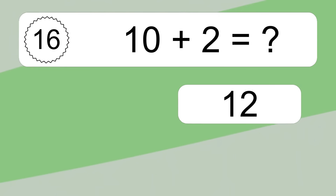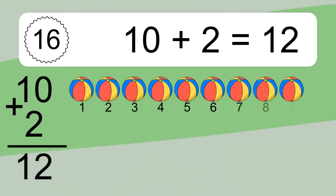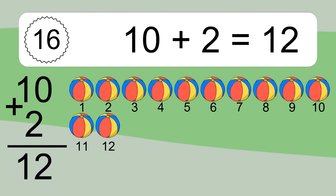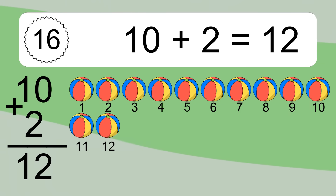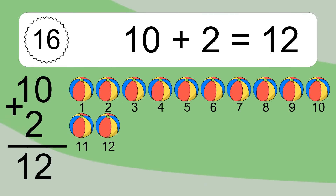10 plus 2 equals what? 10 plus 2 equals 12. Let's count it: 1, 2, 3, 4, 5, 6, 7, 8, 9, 10, 11, 12.